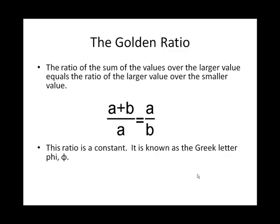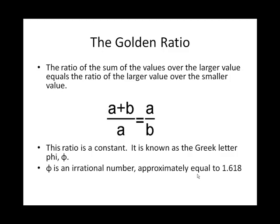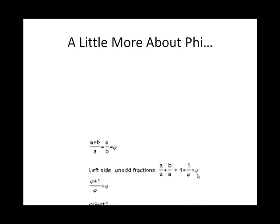This ratio is a constant. It is known as phi. Phi is an irrational number approximately equal to 1.618.